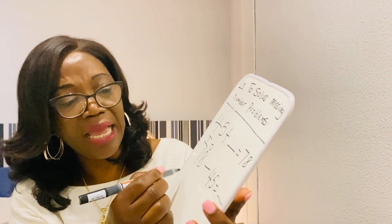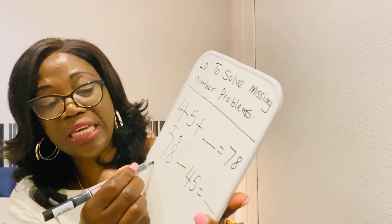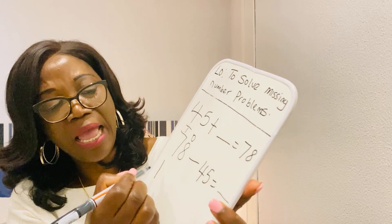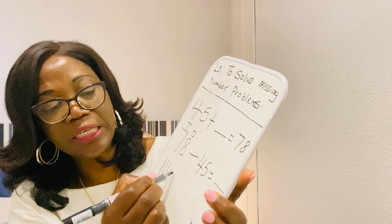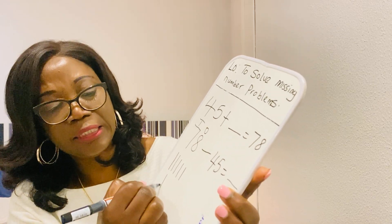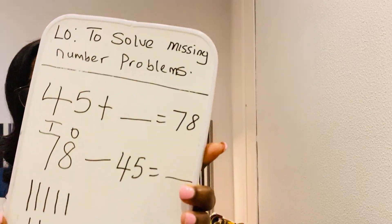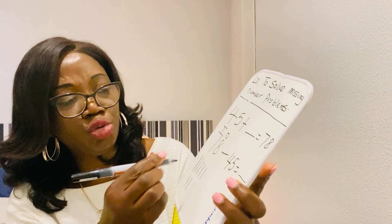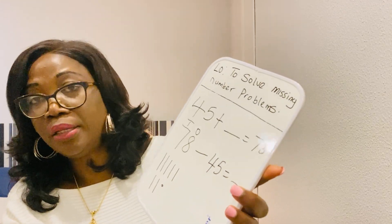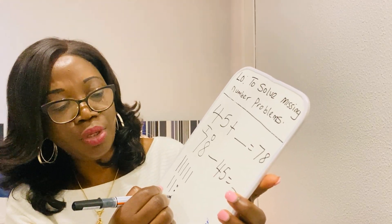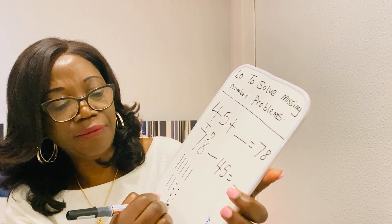So I draw 7 tens — that makes 70. So that would be 10, 20, 30, 40, 50, 60, 70. So we have 70. How many ones are we supposed to draw? I think we need to draw 8 ones. So 1, 2, 3, 4, 5, 6, 7, 8.